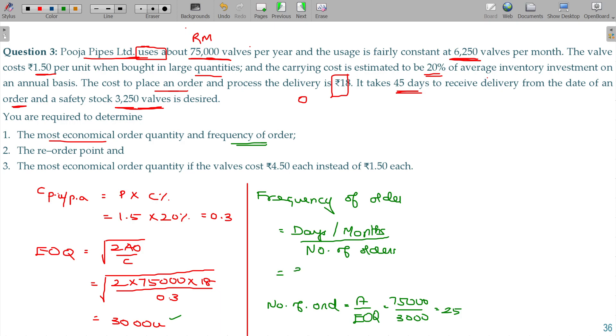Days in a year being 360 days divided by 25 equals 14 days. Once in every 14 days you are ordering your requirement of 3,000 units. So you are purchasing once in every 14 days - that's called frequency of order.